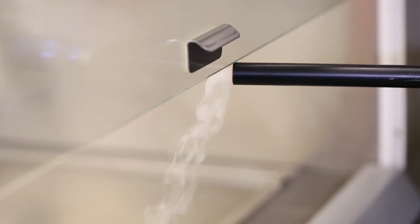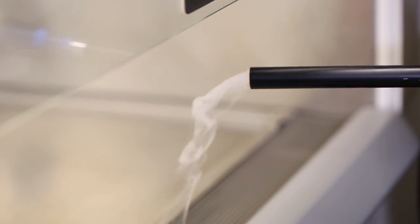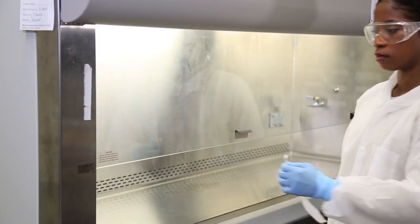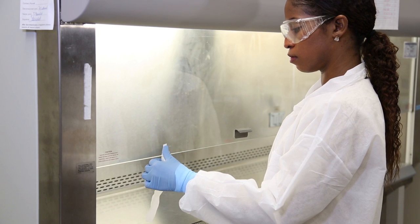Inward airflow should be verified prior to use. You can use a smoke generator, or you can tape a tissue to the bottom of the sash. The tissue should be drawn into the cabinet to show inward airflow.